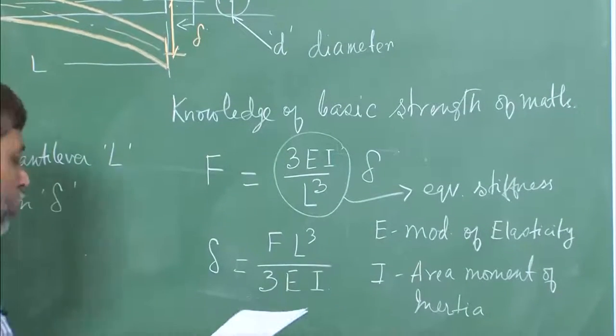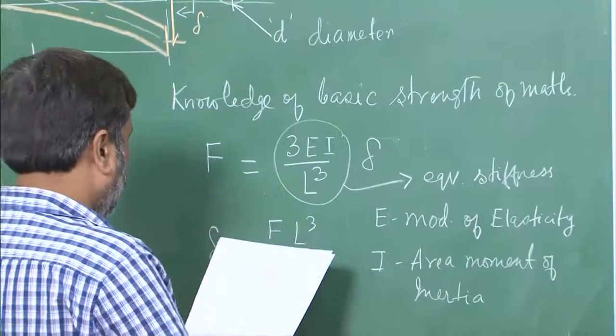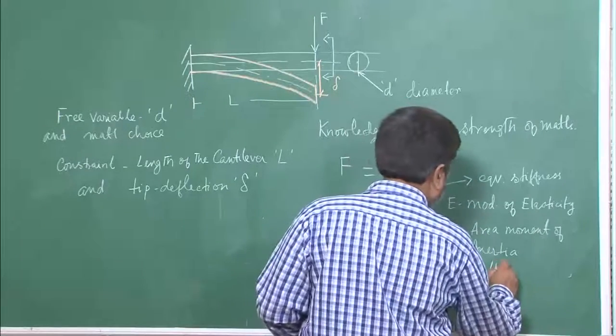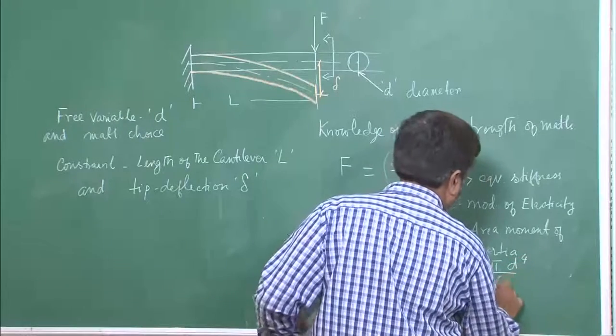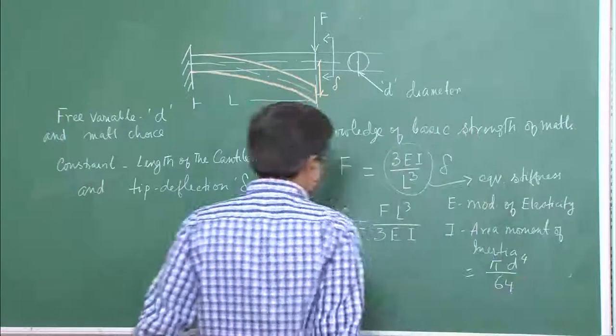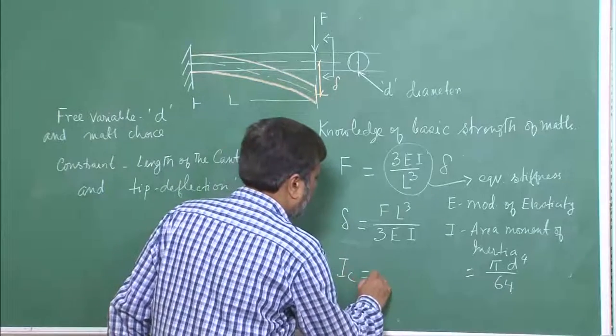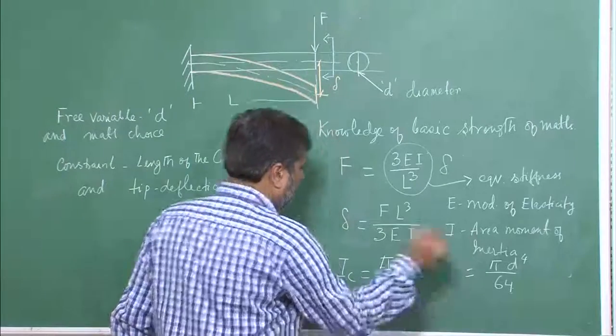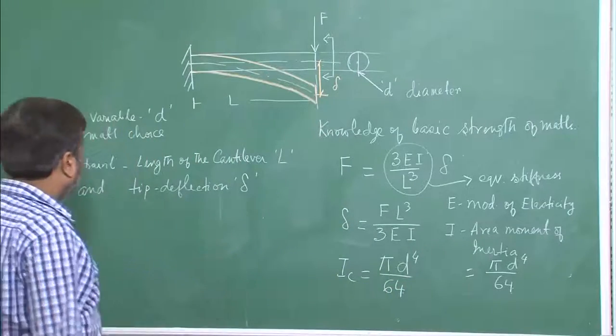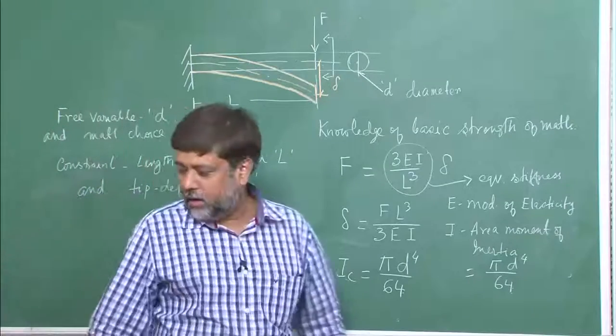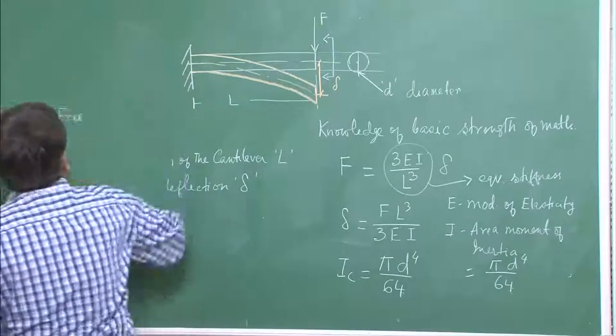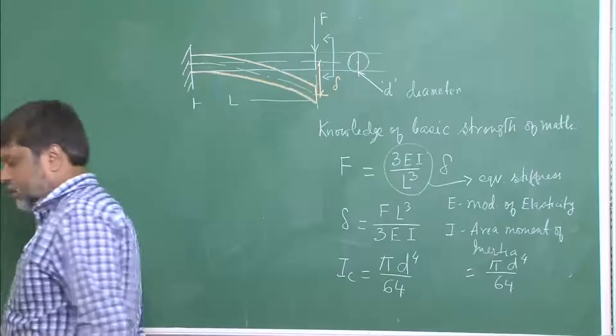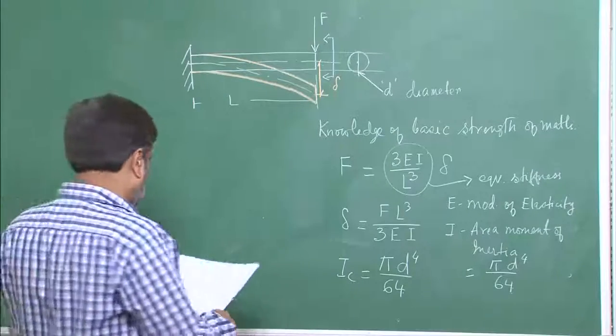For a circular cross section, I in our case is actually pi d to the power 4 over 64. I_c is pi d to the power 4 over 64. Now let us try to use all these facts together and carry out the analysis further to find out something called the material index or the performance index.